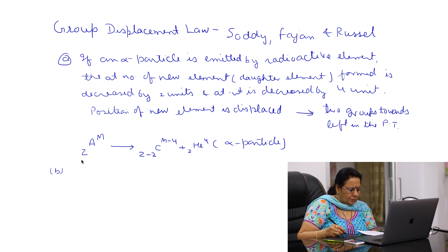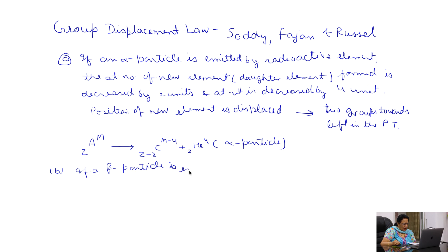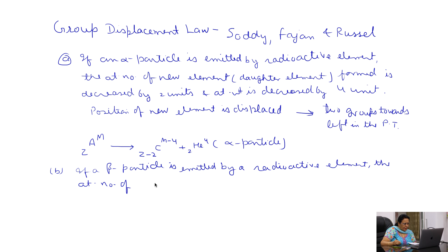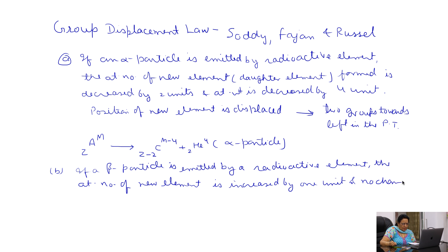The second important part of this law is: if a beta particle is emitted by a radioactive element, the atomic number of the daughter element or new element is increased by 1 unit, and there is no change in atomic mass.